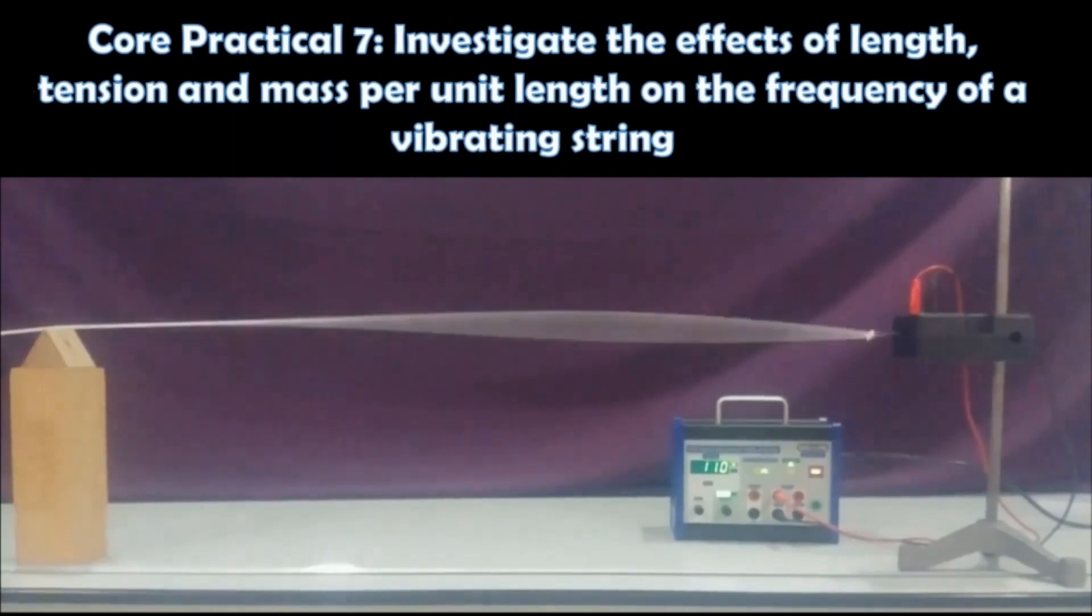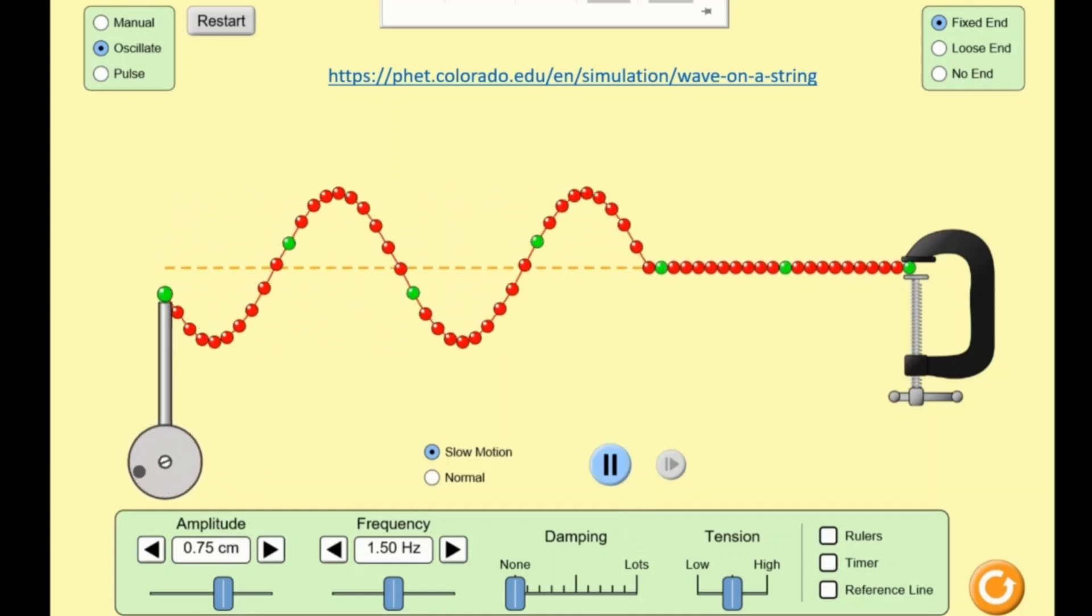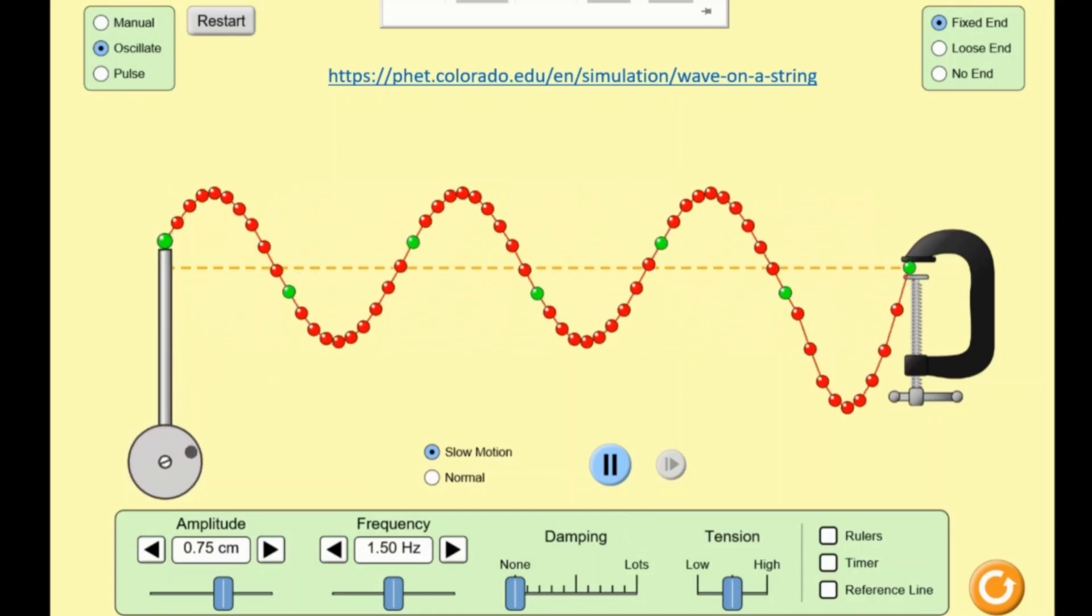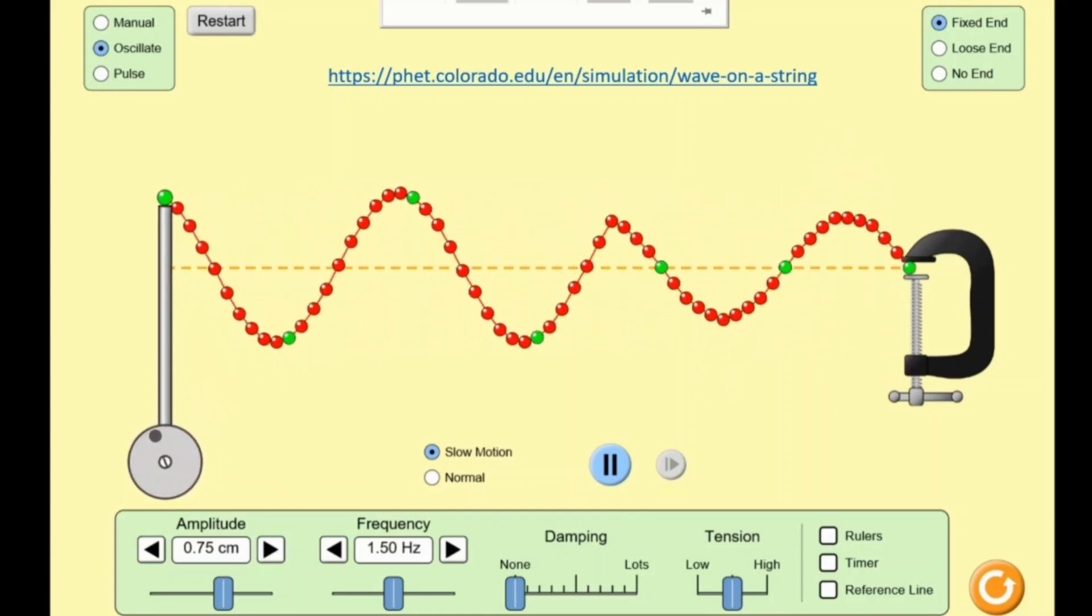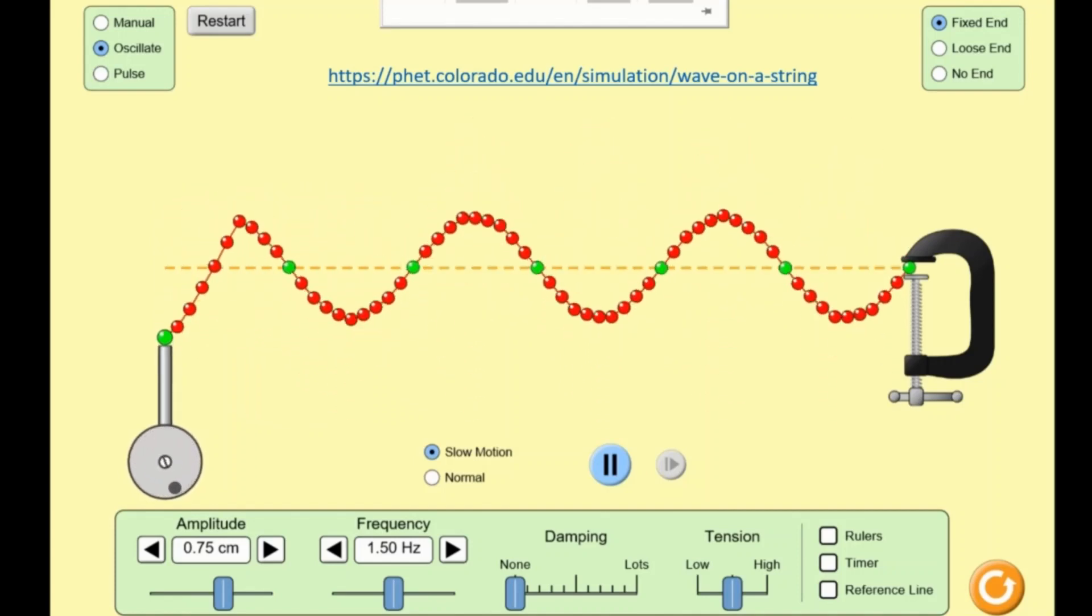Here is a wonderful simulation from PhET Colorado EDU. The oscillator is making a wave which is incident onto the G clamp. The G clamp reflects that wave, and the reflected wave interferes with the oncoming wave, producing a standing wave.